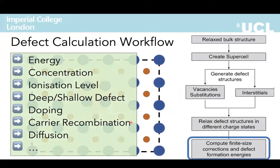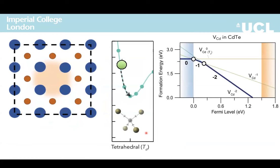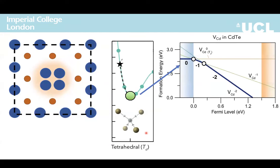From these calculations we can derive essentially all properties associated with the defect in the material, including its concentration, ionization level, deep or shallow behavior, predicted doping behavior, electron-hole recombination, and diffusion. So essentially, from the final defect structure we derive all properties associated with the defect.